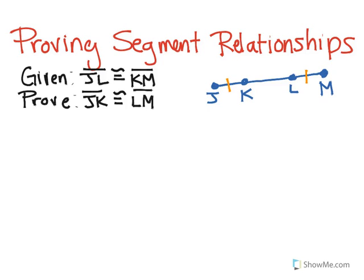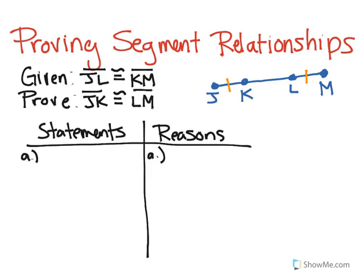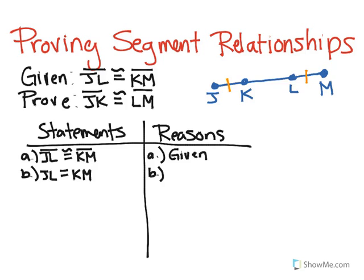JK congruent to LM. What we have to do first is get our two-column proof all ready to go. In any kind of proof, the first thing we always do is list the given information. Then I'm going to take my given information and see what else I can conclude. If I have a segment congruent to another segment, their lengths are equivalent as well. So I can say JL is equal to KM, and my reason is the definition of congruence.